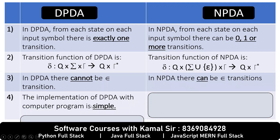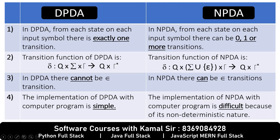DPDA's implementation is simple because there is exactly one transition from every state. NPDA is more difficult because of its non-deterministic nature.